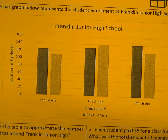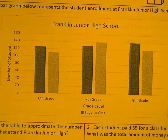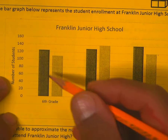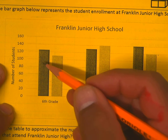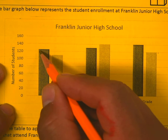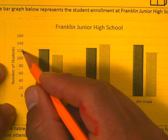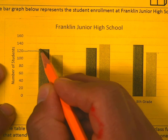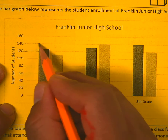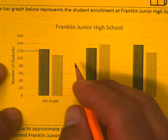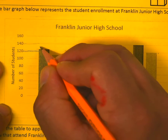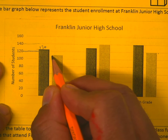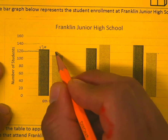Whenever you're doing these kind of bar graphs, it's very important that you first figure out the totals for each one. For example, 6th grade is roughly a little more than 120 — this is 120 right here, and this is 140 — so I'm going to estimate, más o menos, about 130. This other one is between 100 and 120, so about 110.